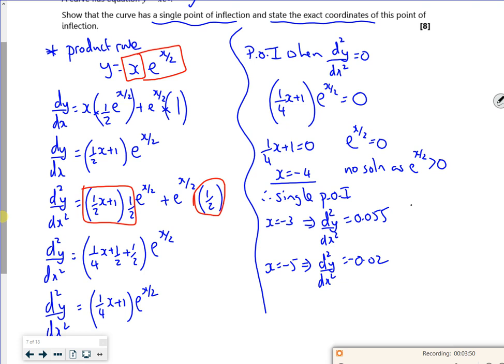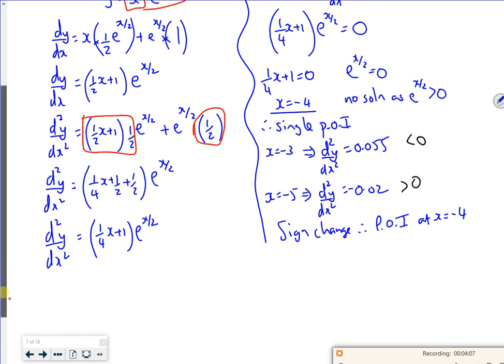is minus 0.02. So I've got one bit which is less than 0, one bit which is greater than 0. So I've got a sign change. Therefore, the point of inflection is at x is minus 4. So I've proved I've got a single point of inflection. Now I'm just trying to get the exact coordinates.